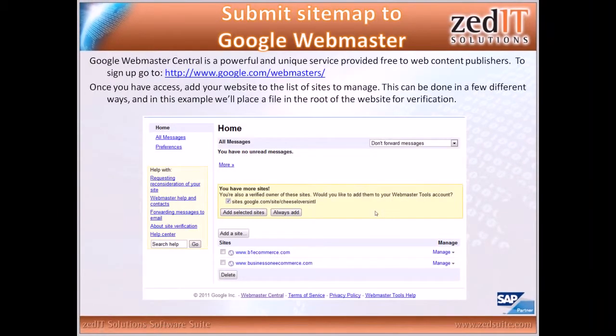Google Webmaster Central is a powerful and unique service provided free to web content publishers. It's simple to sign up — just go to google.com/webmasters. Once you have access, add your website to the list of sites to manage. This can be done in a few different ways. In this example, we're just going to place a file in the root of the website for verification.